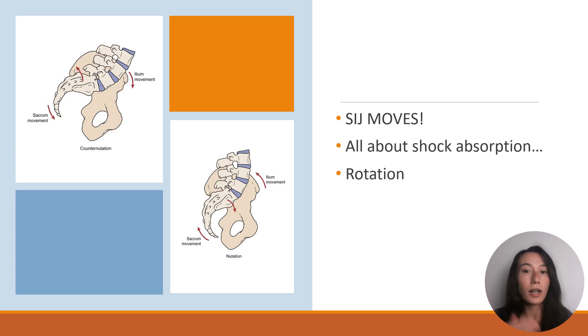Your shock absorption is coming from the sacrum moving into flexion and inferior translation, aka nutation. Every time you're walking, jumping, jogging, or running, you're in that phase of needing shock absorption, aka weight bearing. Your sacrum is going to flex and dampen that force.